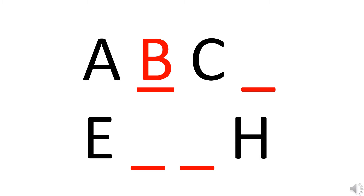Now that we have written B, what is after B? You can see letter C and again there is a blank. So what comes after C children? Yes, letter D. So now we will write letter D.